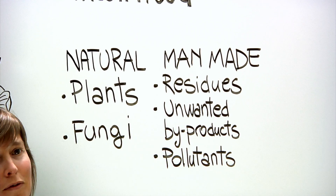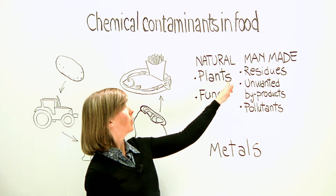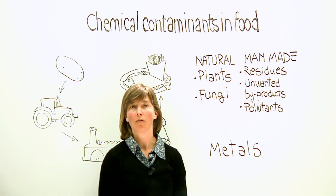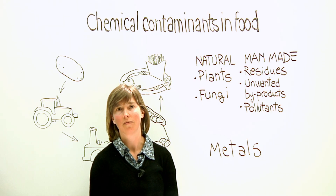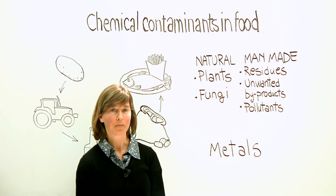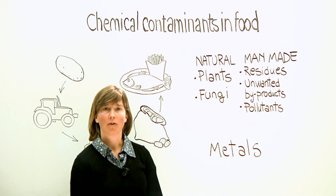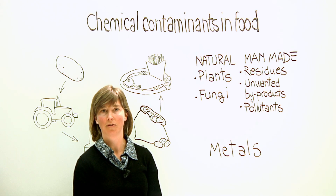If we look first of all at the naturally occurring contaminants and we think about plants, a good example here is green leafy vegetables which produce nitrates, and too many nitrates can have adverse effects in either humans or animals. Fungi also produce toxins. The natural toxins of fungi are called mycotoxins and they contaminate mainly crops such as cereals.